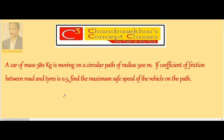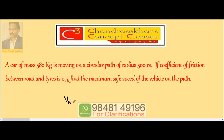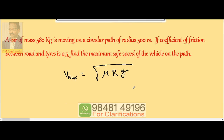We know that the maximum safe speed on a curved path, V maximum, is given by the formula: root of mu times R times G. Substituting the values: mu is 0.5 or 1 by 2, radius is 500, and G we take as 10.